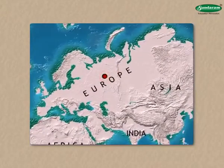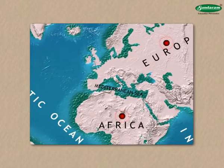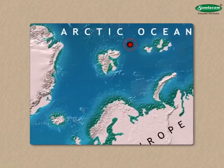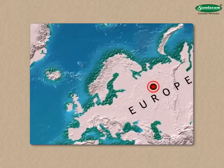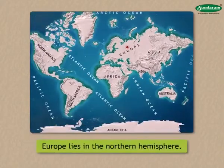The continent of Europe is to the west of Asia. The Mediterranean Sea lies between the continents of Europe and Africa. The Atlantic Ocean is to the west of Europe, whereas the Arctic Ocean is to the north. This continent extends in both the western and eastern hemispheres, and the whole of this continent lies in the northern hemisphere.